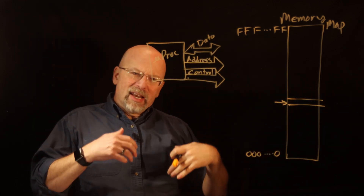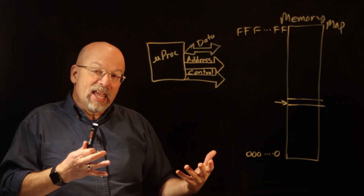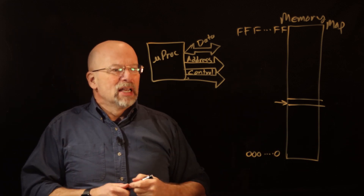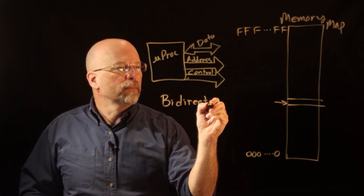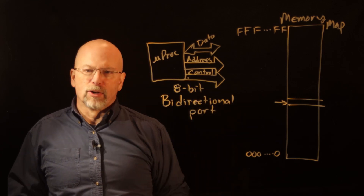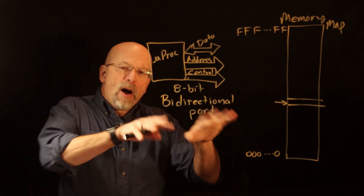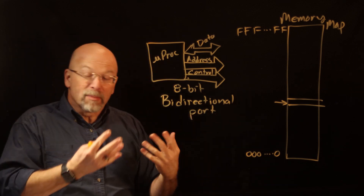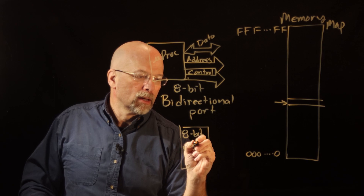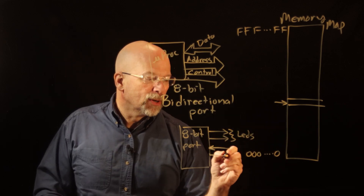It turns out that I/O is typically interacted with in the same method — we give an address where a specific I/O device is located, and there may be a full range of addresses. Let's start with something simple: a bi-directional 8-bit port. This is a piece of hardware that allows us to either output 8 bits, input 8 bits, or some combination. Coming out of this port we have eight lines — maybe a couple controlling LEDs and a couple of inputs coming from switches.